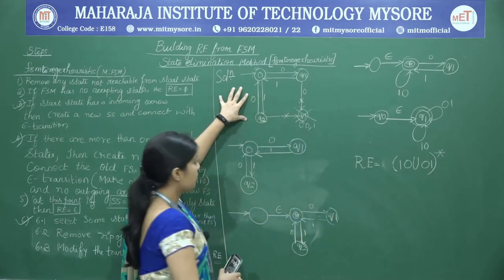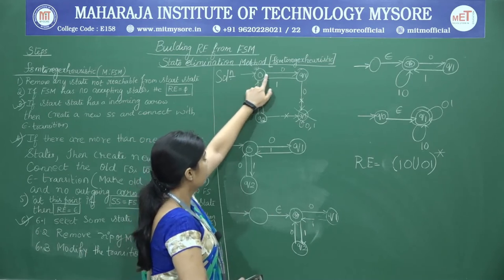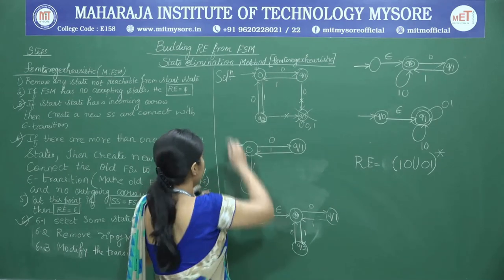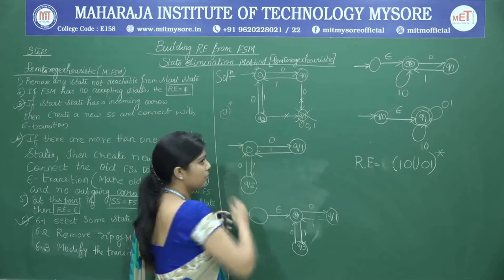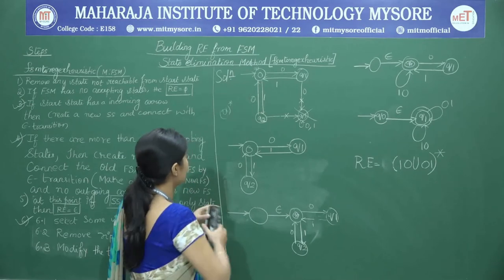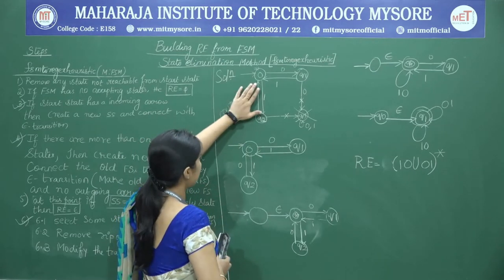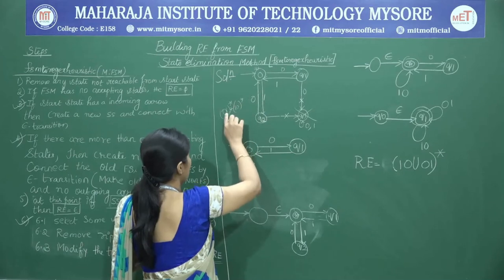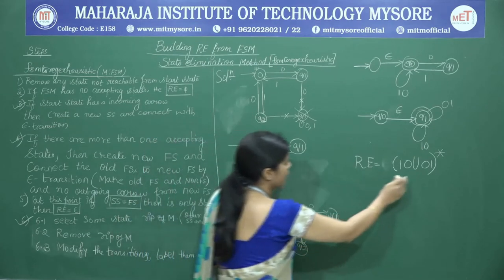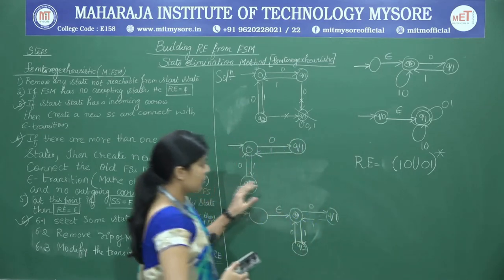Looking at the original problem, the final state accepts strings like 0, 1 repeating n times, or 1, 0 repeating any number of times. The automata can either accept 0, 1 any number of times or 1, 0 any number of times. The derived regular expression matches this exactly. This is the end of the first problem.